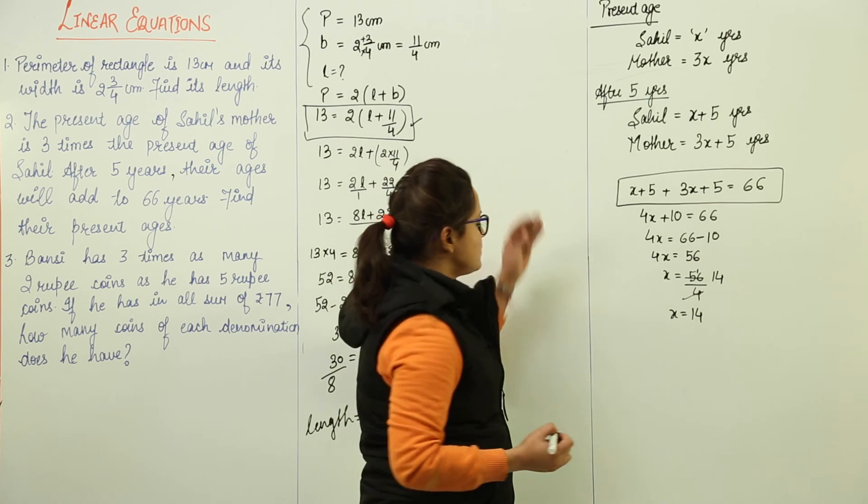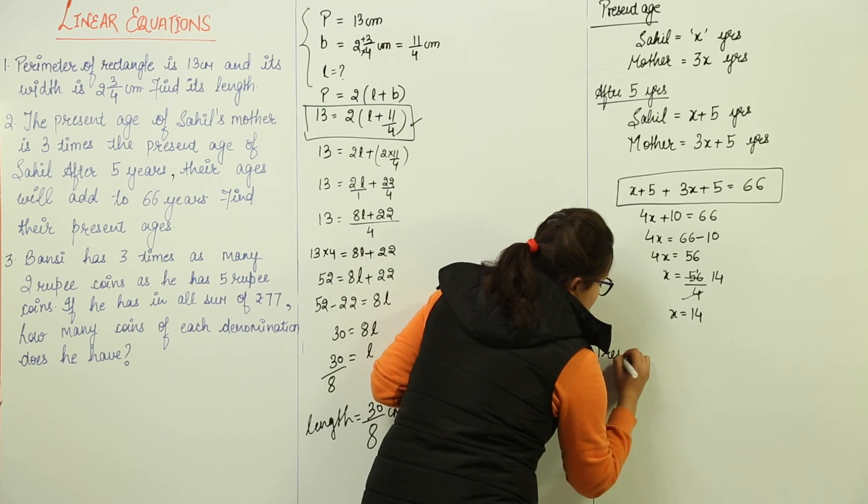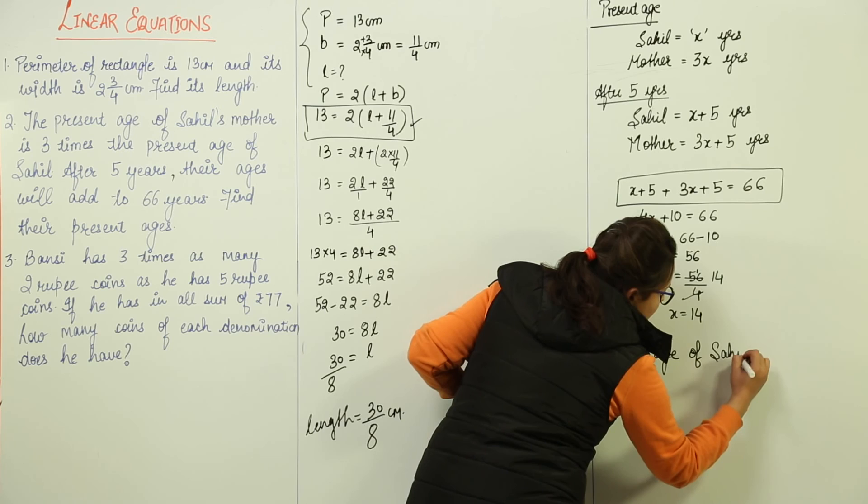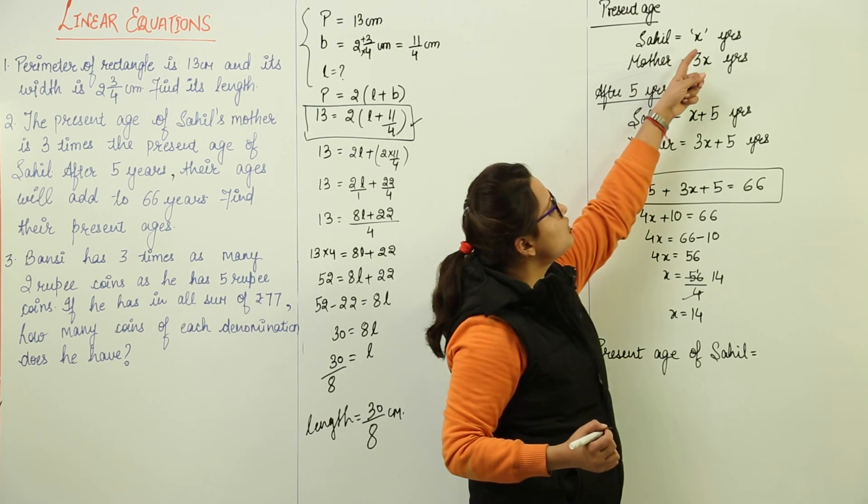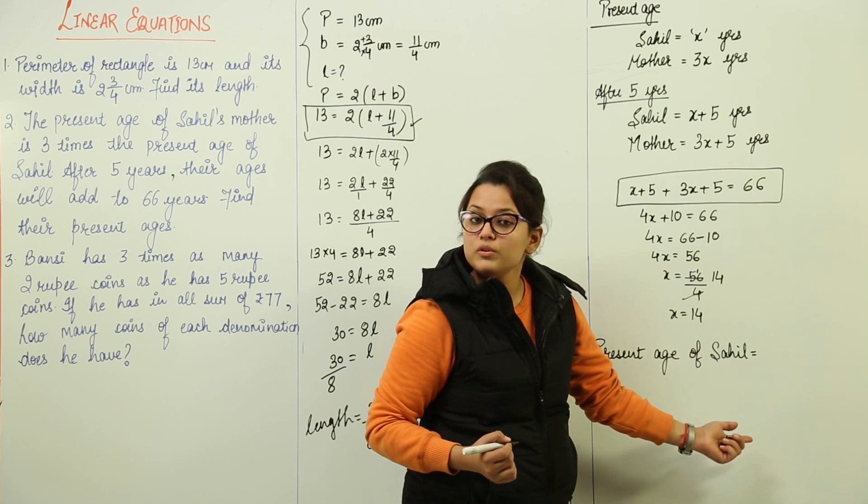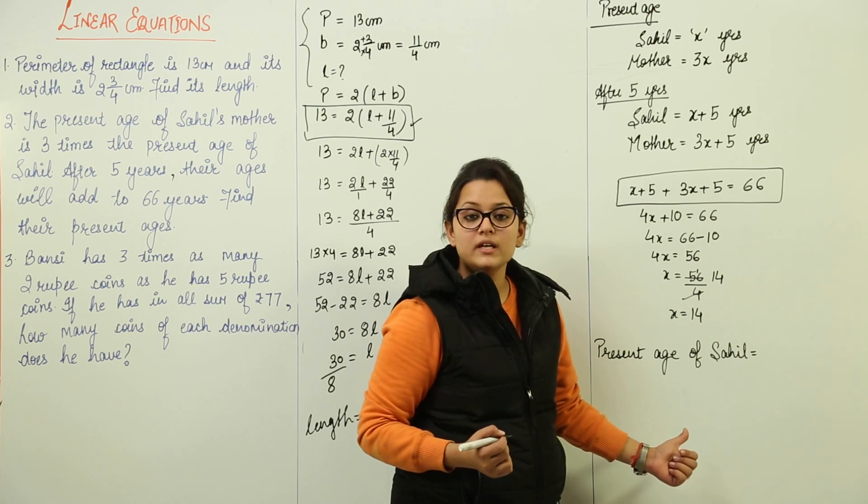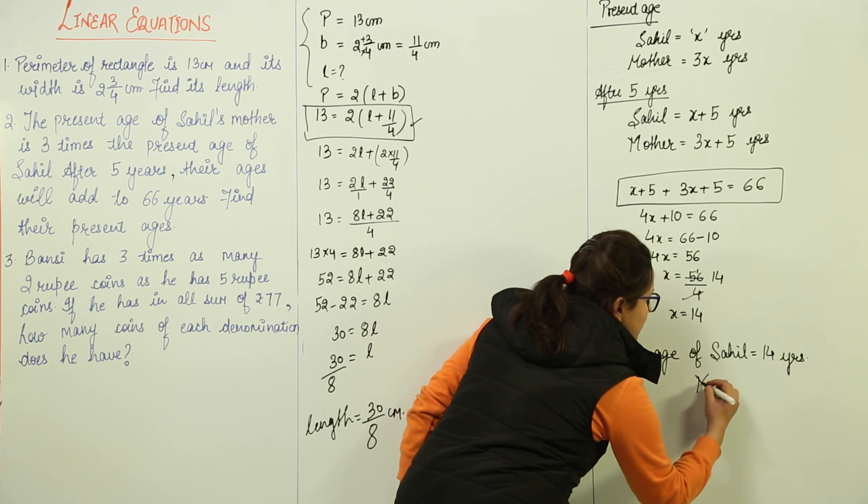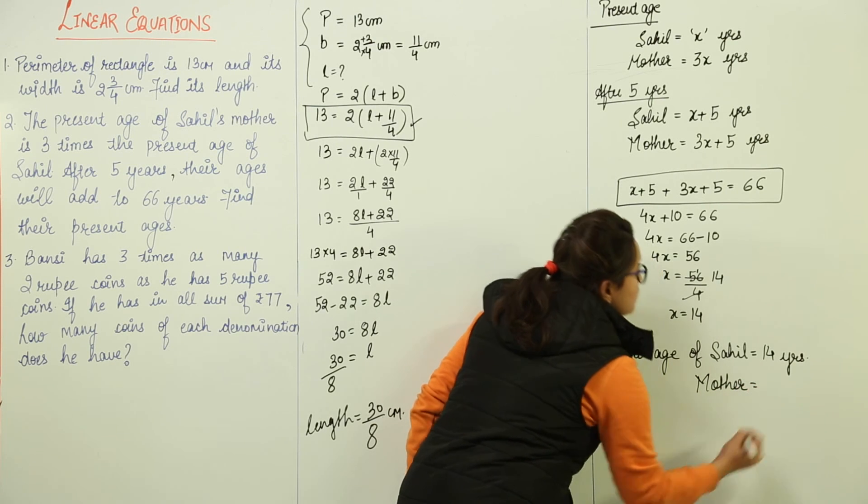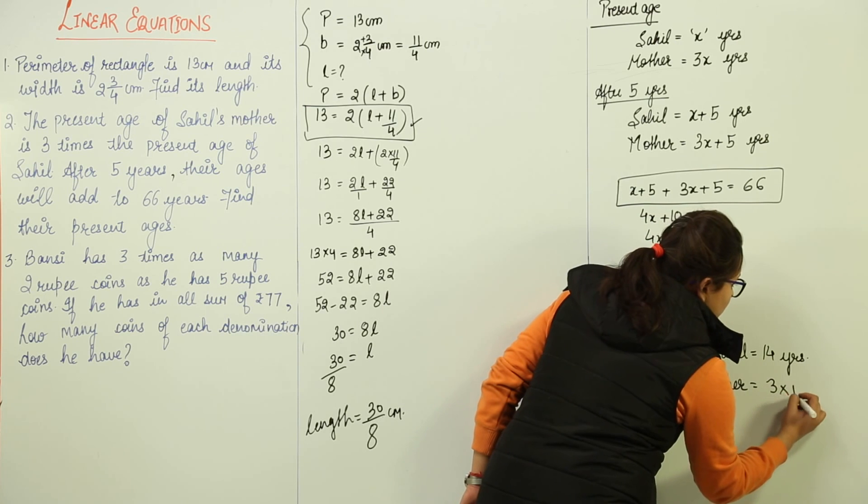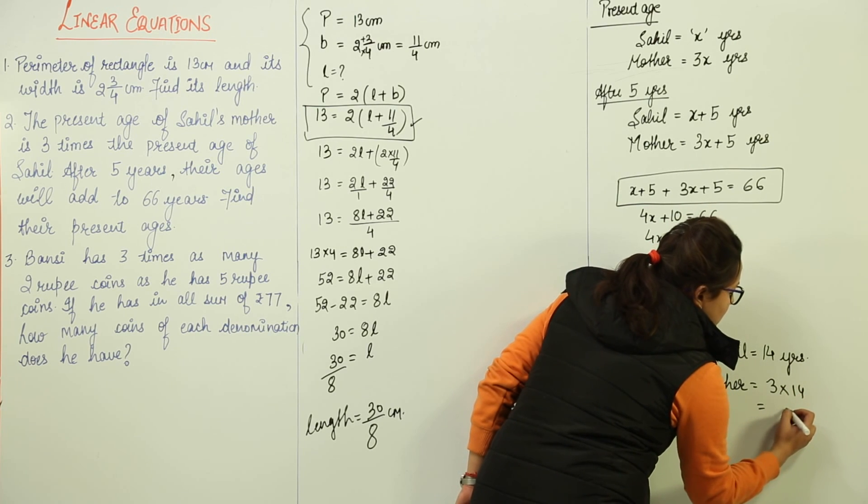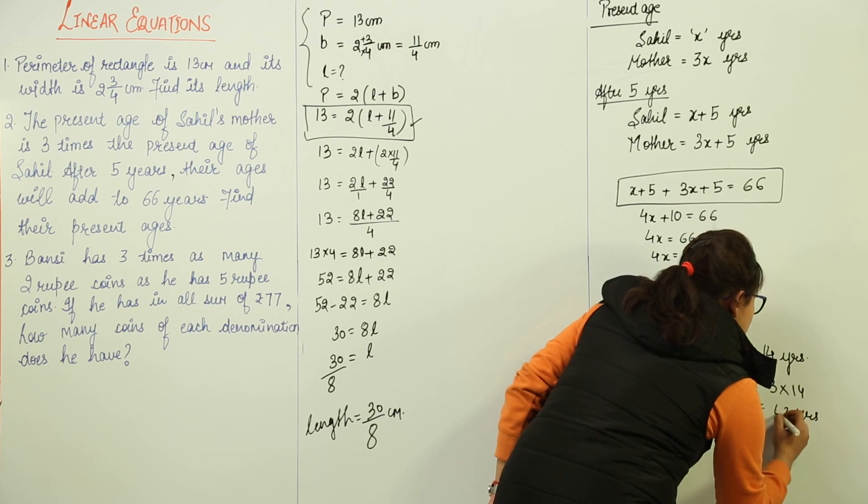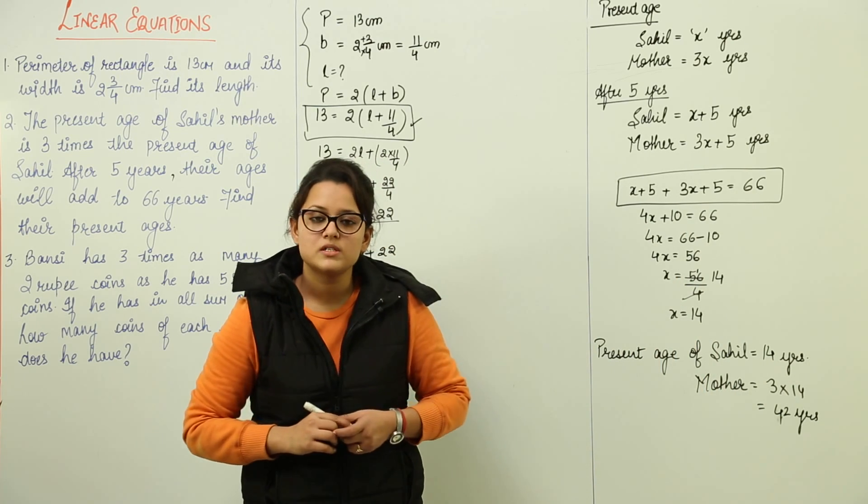Now X is coming out to be 14. Let us get back to our question. We had to find the present age of Sahil as well as his mother. So present age of Sahil is how much? We have assumed it to be X years, so the X value comes out to be 14. We can say that the present age of Sahil is 14 years. Now what would be his mother's age? We had assumed her mother's age to be 3X, that means 3 into 14. So what is 3 into 14? 42 years.